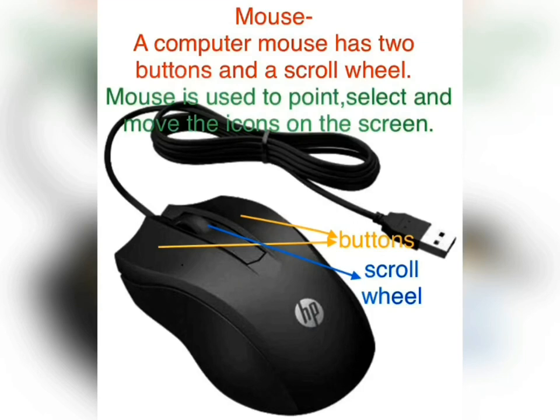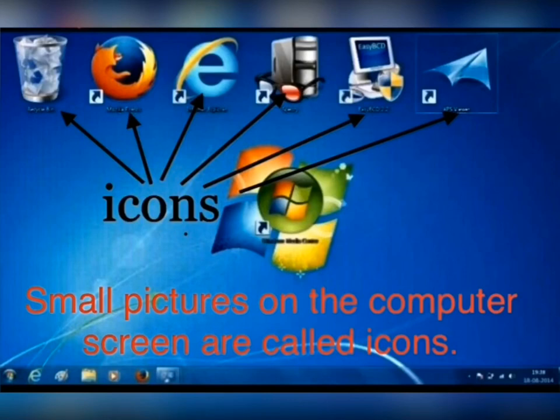Mouse: Mouse is also an input device. A computer mouse has two buttons and a scroll wheel — right button, left button, and a scroll wheel in between, as you can see in the picture. Mouse is used to point, select and move the icons on the screen. The small pictures on the computer screen are called icons.